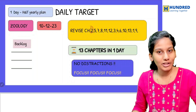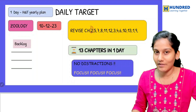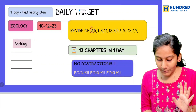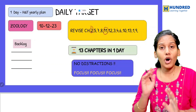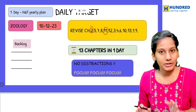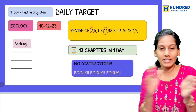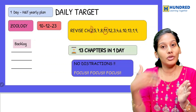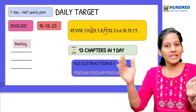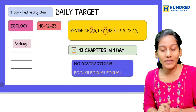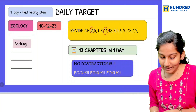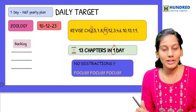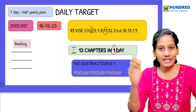We will cover all the questions in each chapter. Next is organisms and population. In this first set of chapters, you will gain more and more confidence. That's why we cover them in this sequence. As I told you, studying 13 chapters in one day is definitely possible. Study in this order.